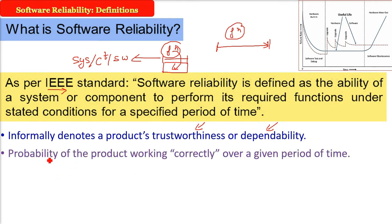So again, the definition of software reliability is the probability of the software product working correctly over a given period of time. Time has to be there, 'correctly' has to be there, and probability has to be there. The definition should consider: probability of the product working correctly, and over a given period of time. These three things are key.